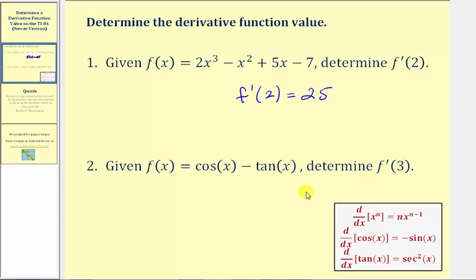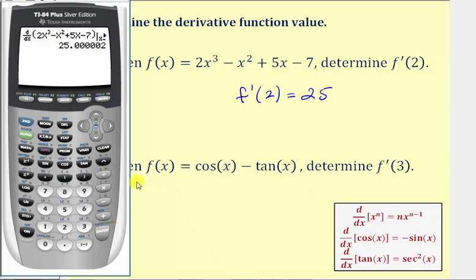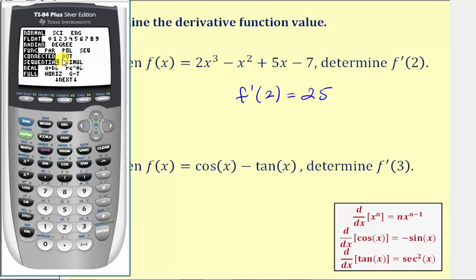So we first want to make sure the calculator is in radian mode. We'll press the mode key. Notice in this third row, radian is highlighted. If it wasn't, we would go down to radian and press enter so that radian is highlighted. Now we'll go back to the home screen by pressing second mode.